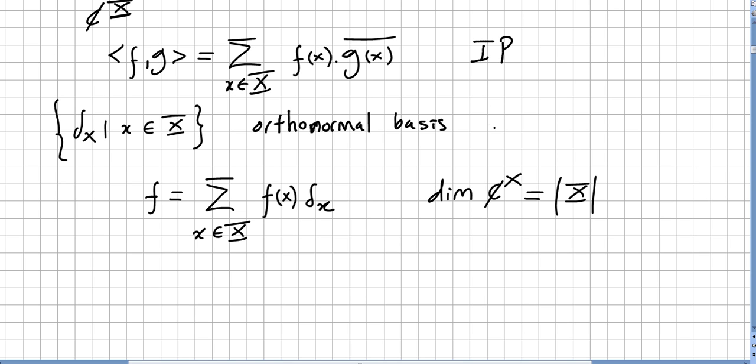So if we pick f, a mapping in this space, then its unique expression as a linear combination of delta x will be f = sum over x in the set X of f(x) times delta x, the function we defined before.